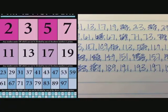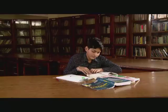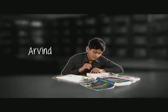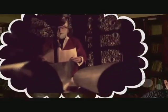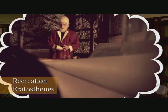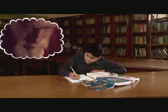Now, primes have fascinated mankind through the ages. Arvind is in the library reading up on this. He reads about Eratosthenes, who was the head librarian in the famous library in Alexandria, Egypt, over 2500 years ago. Among many other things, he worked out a way of locating prime numbers. The method came to be known as the sieve of Eratosthenes. Arvind tries to see how it works.